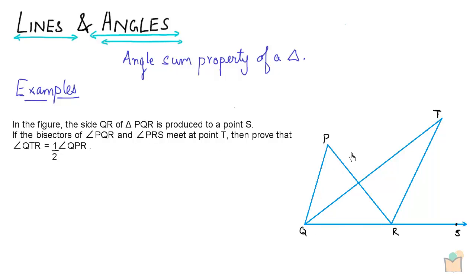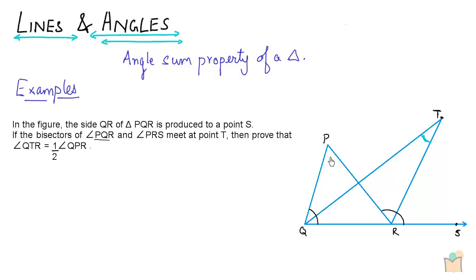So we have triangle PQR. Side QR is produced to point S. There are two angle bisectors: angle PQR is bisected by QT, and angle PRS is bisected by TR. The two bisectors meet at point T. We are supposed to prove that angle QTR is equal to half of angle QPR — that this apex angle is half of that particular angle.